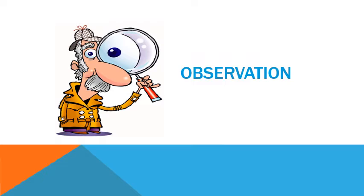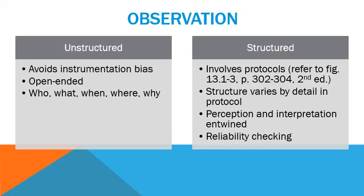Observations are needed to triangulate data collected using other methods. They allow researchers and evaluators to obtain evidence that confirms, disconfirms, or elaborates statements, evidence, or artifacts. Observations can be structured or unstructured. Unstructured observations avoid instrumentation bias, which is the misdirection of attention based on advanced focusing.